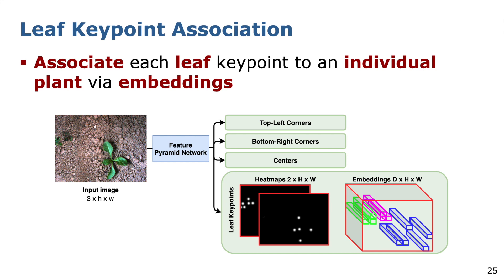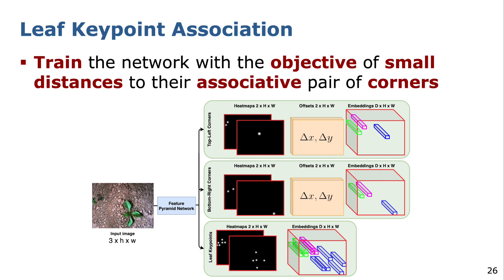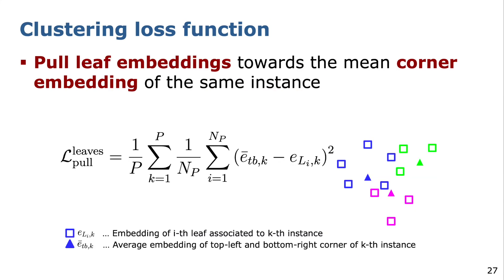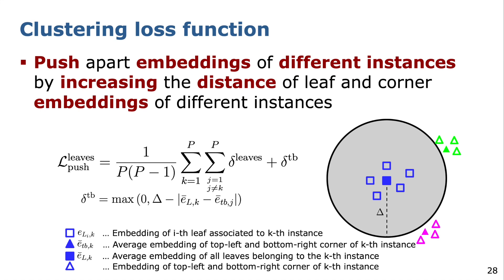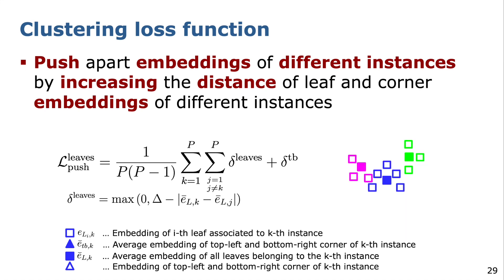This brings me to the last step of our approach. In addition to the heat map, we predict embeddings for each leaf keypoint which again serve as a feature descriptor. We train the network with the objective of small distances between all embeddings belonging to the same instance and large distances between embeddings of different instances. To achieve this, we define a clustering loss function with two objectives: first, we minimize the squared distance between corner and leaf keypoint embeddings belonging to the same instance; second, we increase the distance between leaf keypoints and corner embeddings belonging to different instances. This push force is hinged, meaning it is only active up to a certain distance delta. In the same way, we also increase the distance between all leaf keypoint embeddings belonging to different instances.